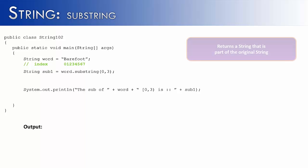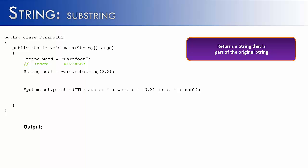And what the method substring does is it returns a string that is part of the original string. So if I have the word barefoot, I can find parts or substrings of the original word. And the first one that we're going to look for is the word bare.